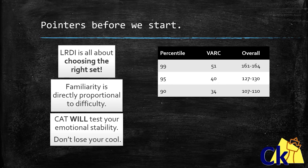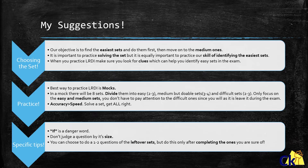Here is a small table which will give you a snapshot. To get a 99 percentile, you need to solve four sets — because in LRDI if you solve a set you get four questions right and usually the accuracy is very close to 100%. So aim for at least four sets, and if you want 99 percentile, aim for four sets plus a few questions here and there.